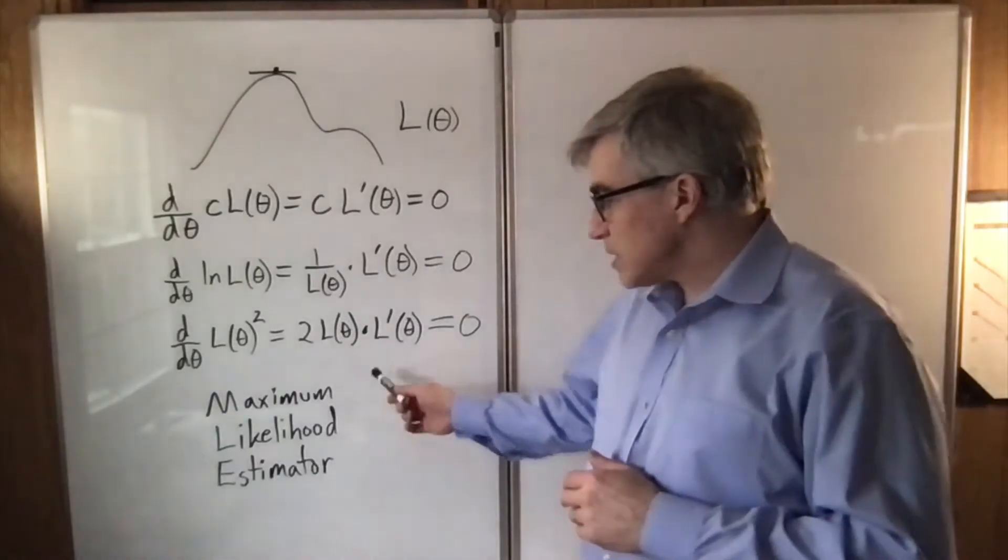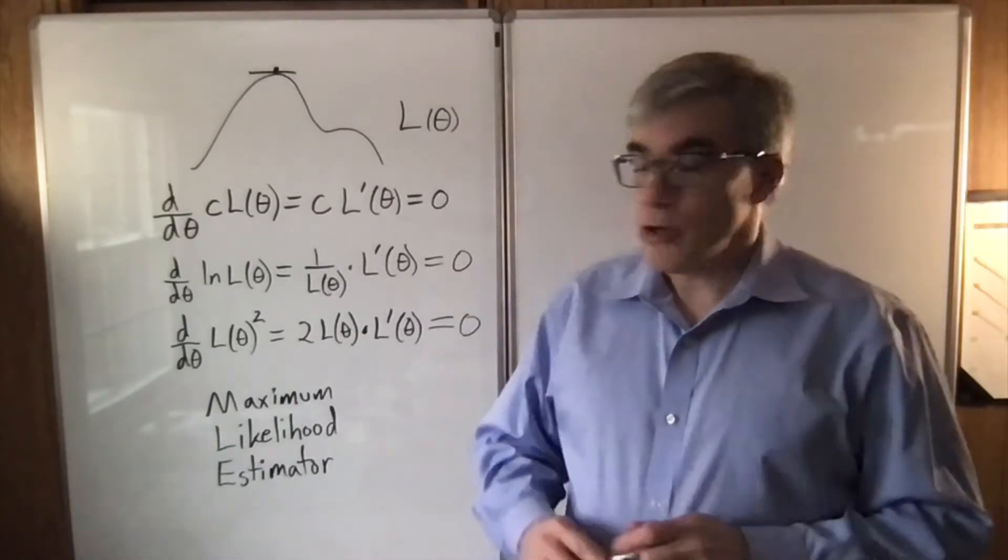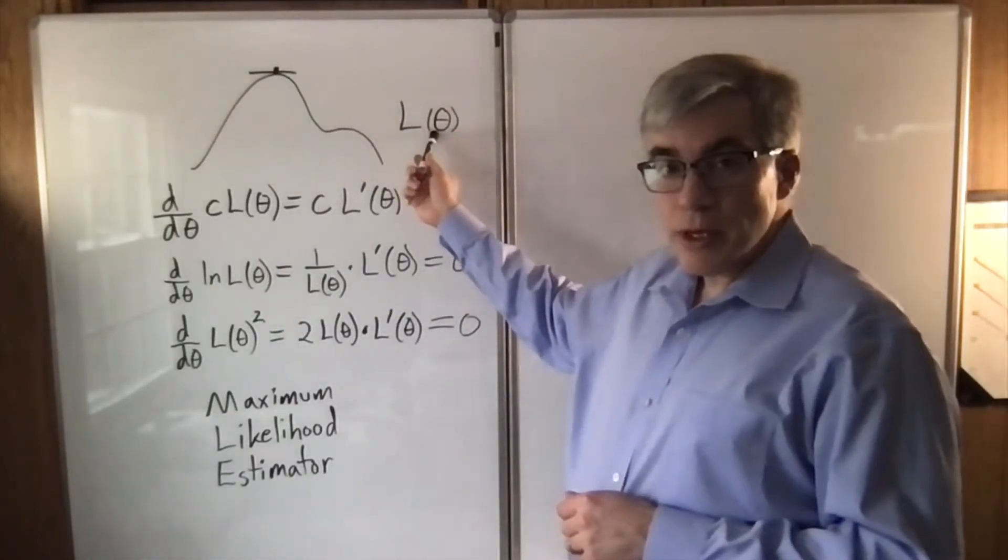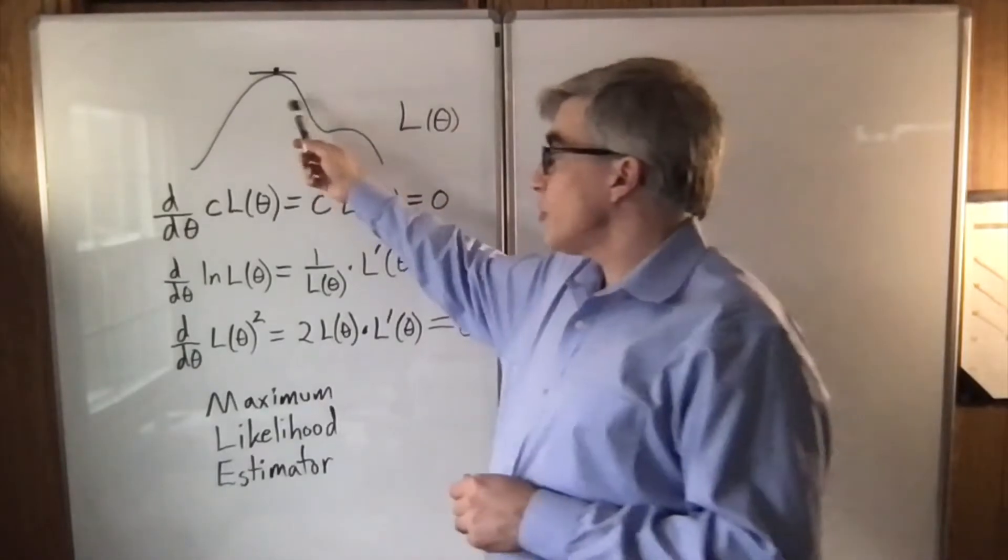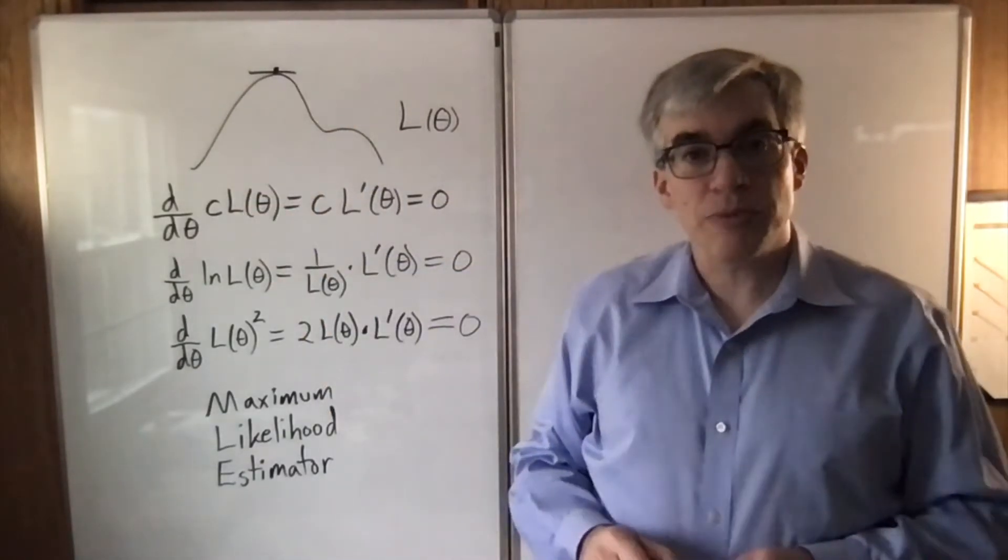So to find the maximum likelihood estimator, you get a formula for the likelihood, and then you do the usual. You take the derivative of it and set it equal to zero to find where it might be a max or a min.